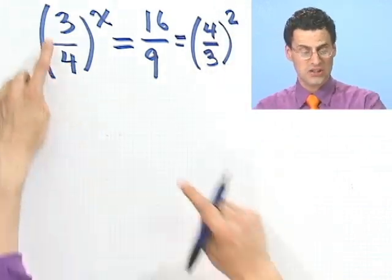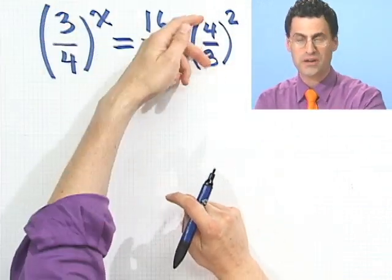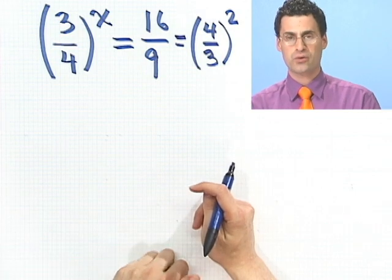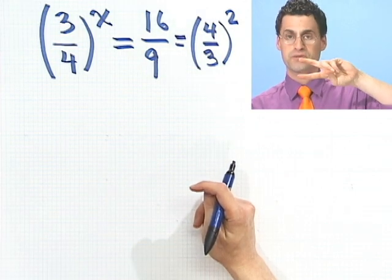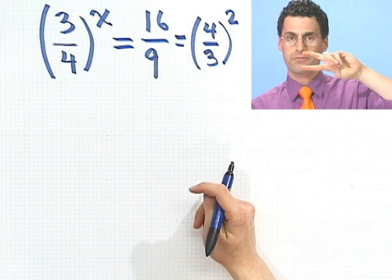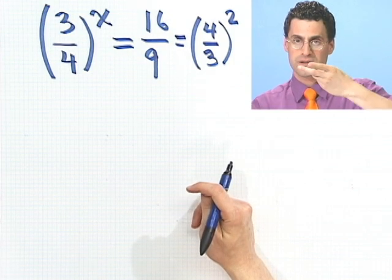So that was pretty easy. It looks so close to this, I actually want a 3/4. Well how do I make that a 3/4? I just take 4/3 and flip it twice. 4/3, 3/4, 4/3.